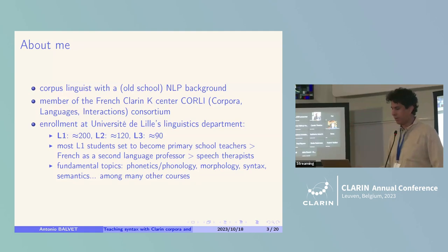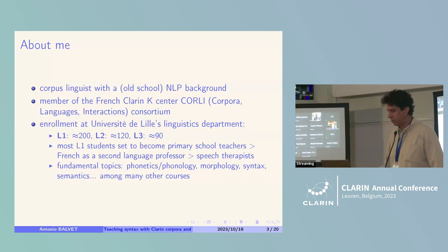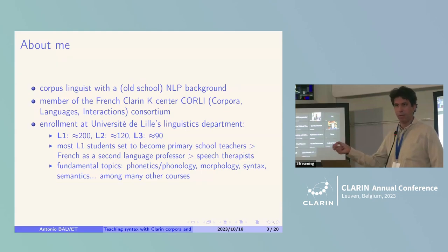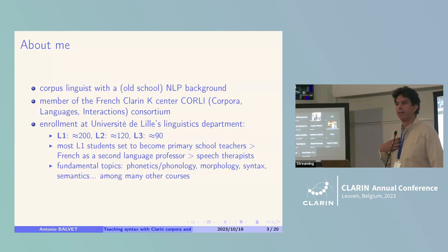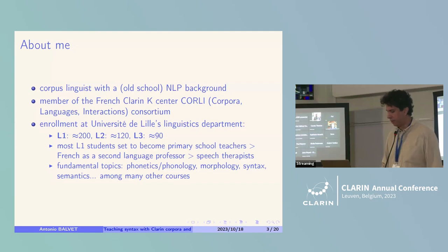Here are the rough figures. L1, L2, L3 — those are the first, second, and third year students. We don't have small groups; we have groups in the hundreds. One thing to know is that we don't have any selection in France. If you complete the baccalaureate, you can apply to university. Most L1 students who enroll in our linguistics curriculum are set to become primary school teachers, French as a second language teachers, or speech therapists — which means they didn't really come for linguistics and syntax, even though they have to learn all of that.